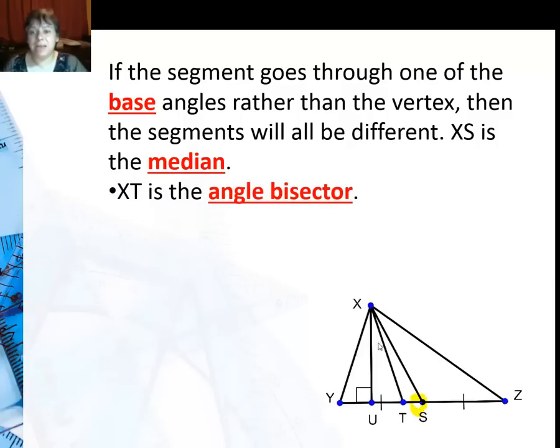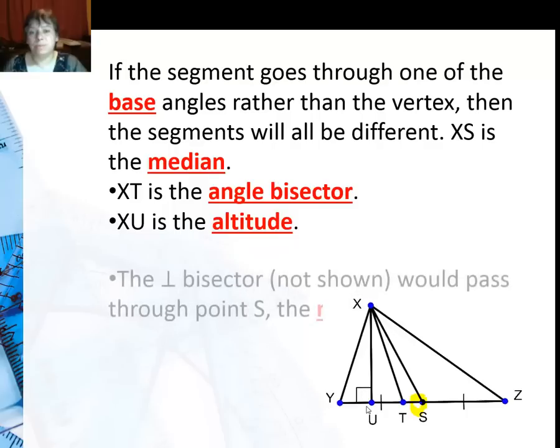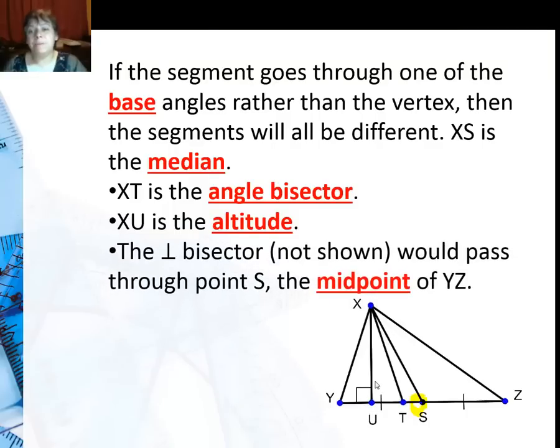XT is the angle bisector and XU is the altitude. The perpendicular bisector would pass through S and it would basically go, pretend I could draw a straight line, straight up and down right there.